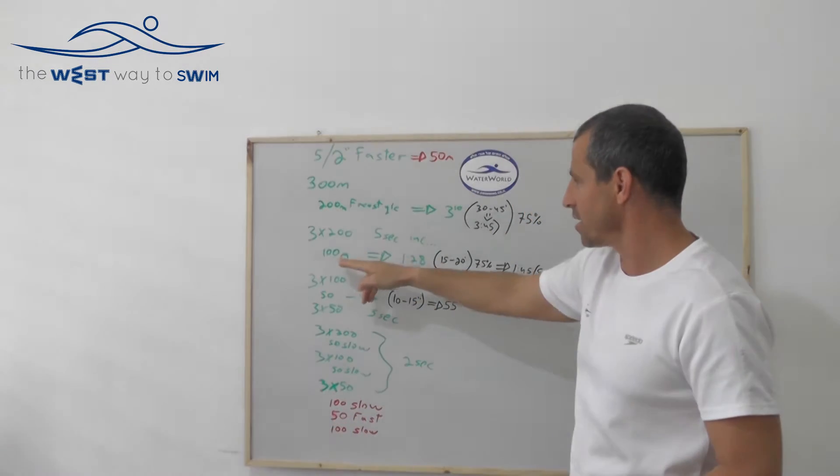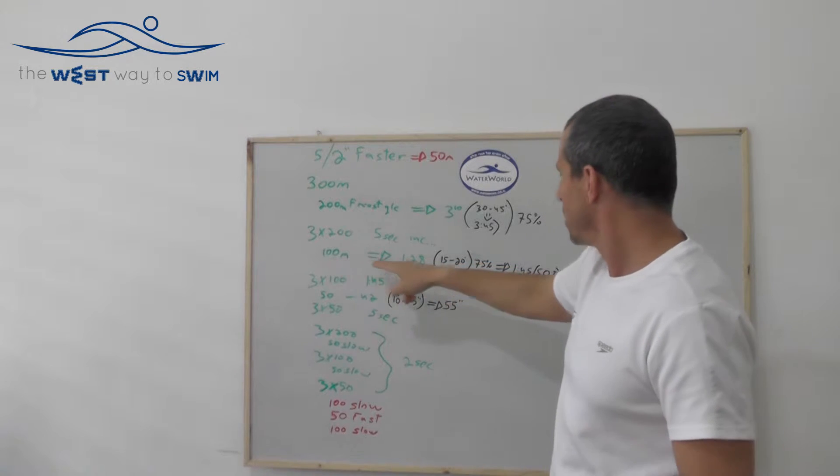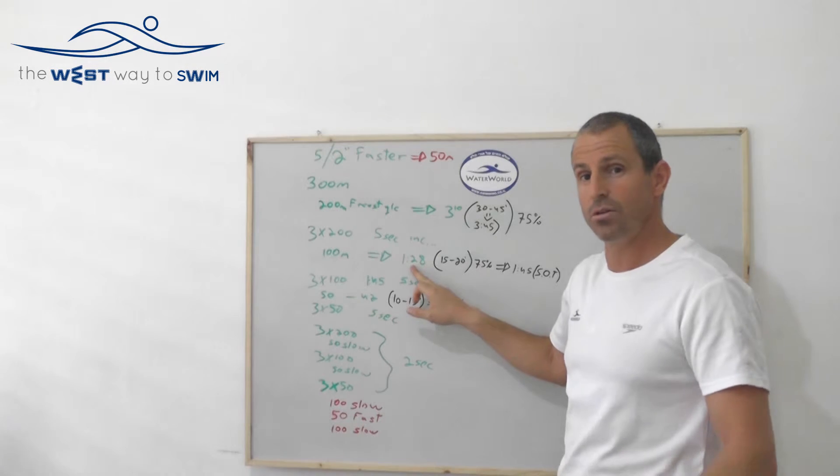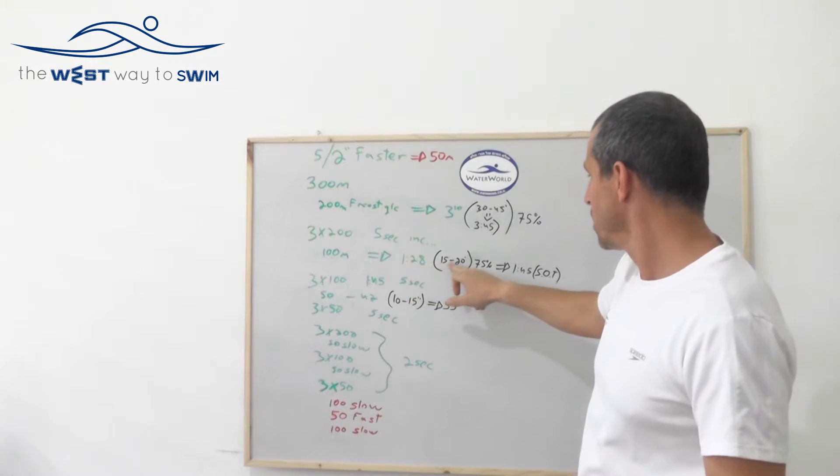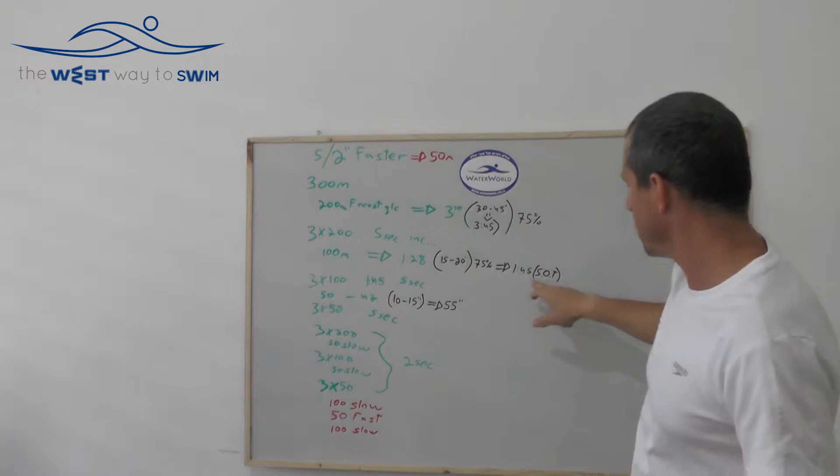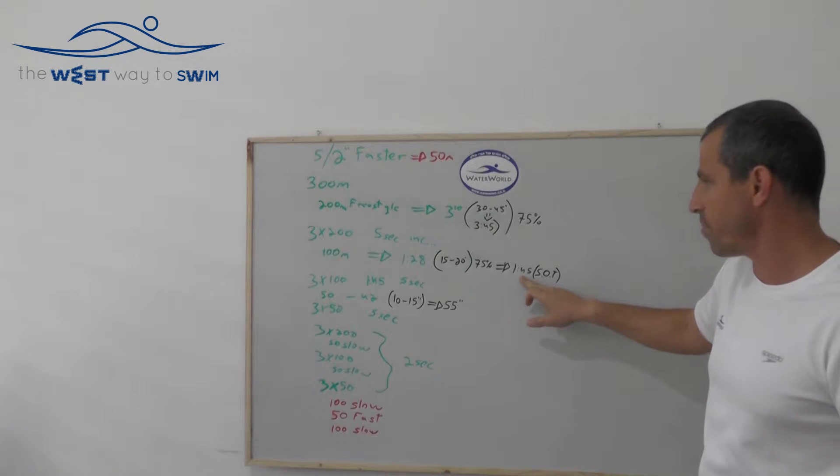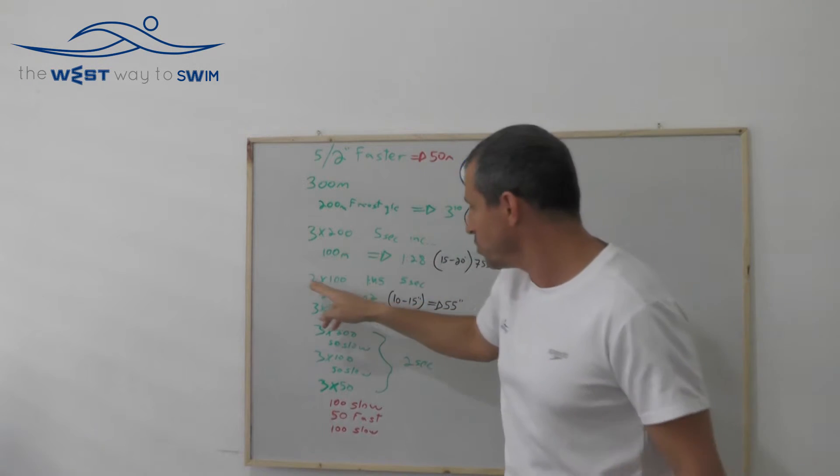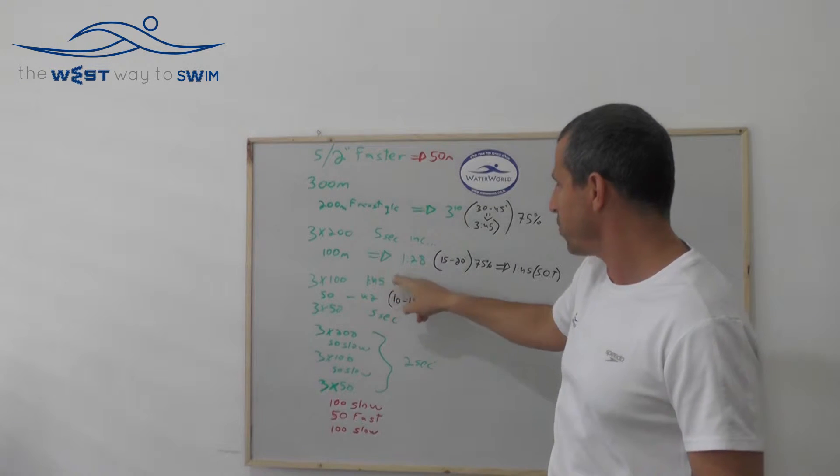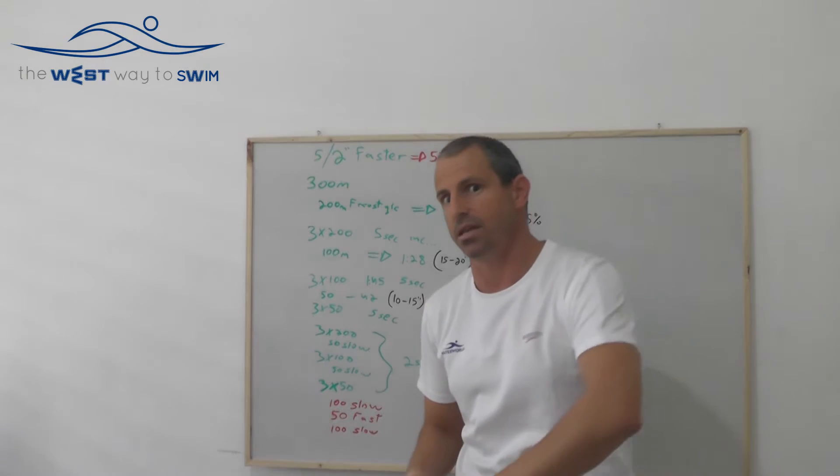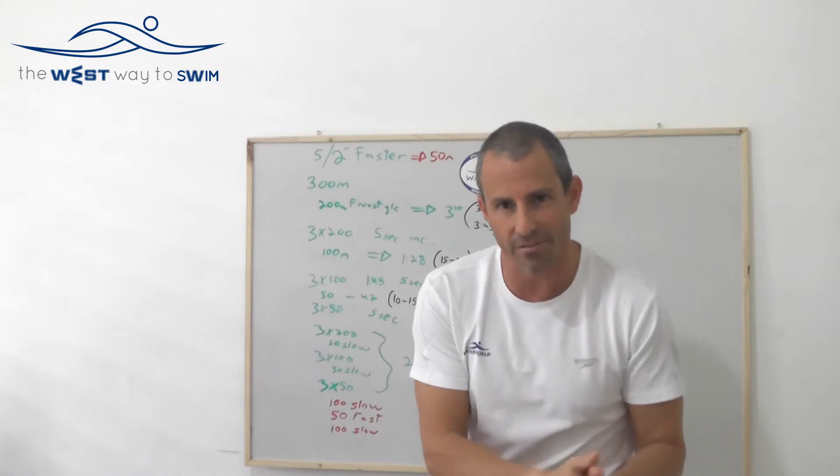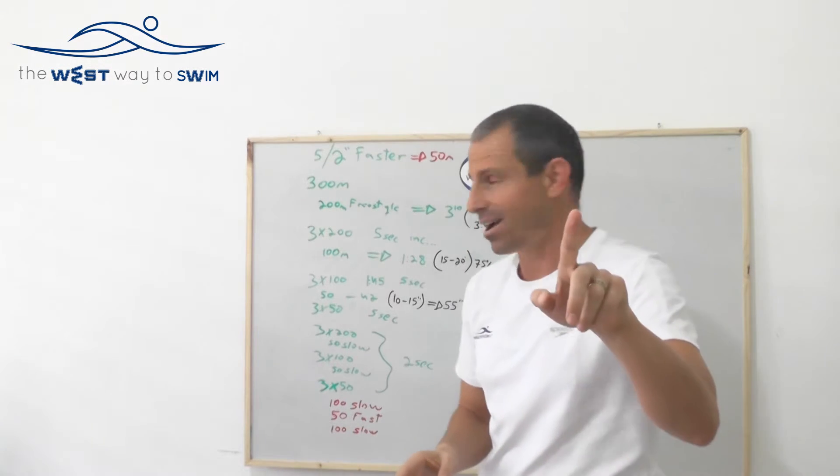The second drill the same thing, 100 meters 75% let's say you did 1:28. You're going to rest each 100 between 15 to 20 seconds. So your send off time is probably going to be 1:45. So we're going to do 3x100 exactly the same drill on 1:45 with 5 seconds increasing pace. Let's say the first 100 is 1:35, 1:30 and 1:25 exactly 5 seconds. That's the idea.